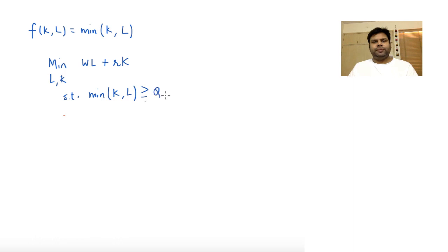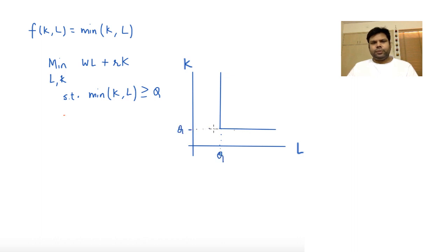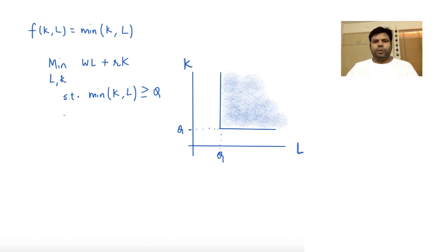To solve this problem, if you plot the constraint, this is how it's going to look. This is Q, this is Q, and this region is the constraint set.